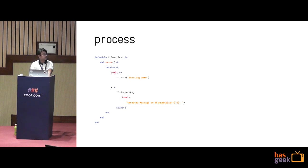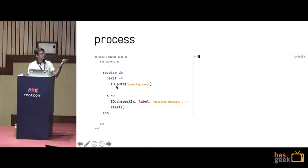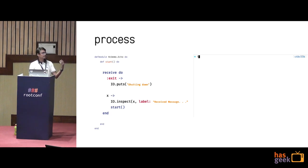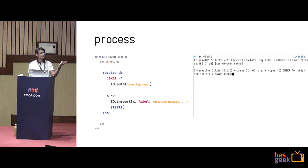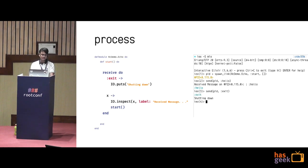This is how you would write a process in Elixir. Here, I'm starting off a receive block, which says: I will block till I get a message in my mailbox. When I do get a message, if it is 'exit', I will just do a shutdown. Otherwise, I'll print the message and then call myself recursively. On the right-hand side in the GIF, I'm starting off the same process. I'll send it a message, which is 'hello', and you can see it gets printed on the console. And if I send 'exit', it just says shutdown. And if I check for the process's aliveness, it says it's not alive anymore.